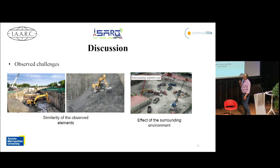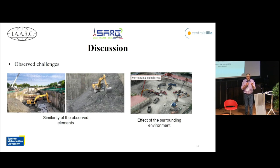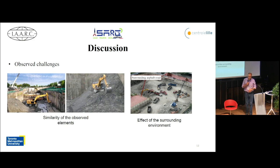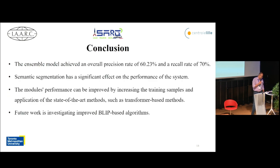Another issue was, for example, in one image you can see dump trucks, soil, and an excavator — this is excavation of a foundation for a high rise construction — but there is also asphalt visible. That asphalt and the existence of equipment which typically exists in road construction misled the classifier into thinking this is highway construction, which is not correct — it is actually foundation construction. These are some of the issues we noticed and are trying to resolve.